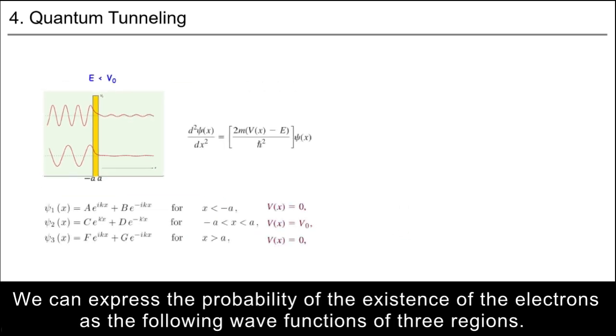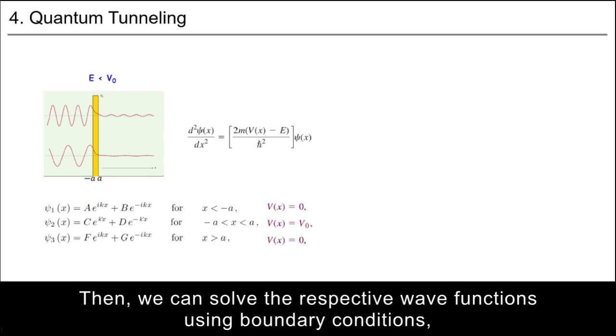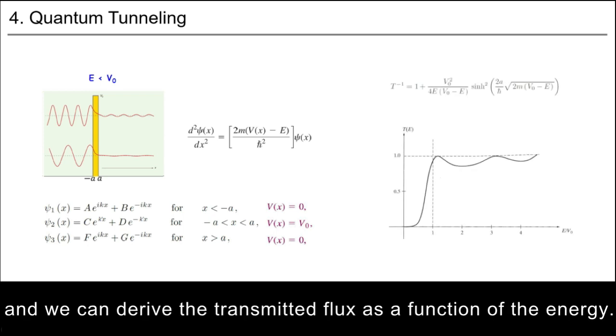We can express the probability of the existence of electrons as the following wave functions of three regions. Then, we can solve the respective wave functions using boundary conditions and derive the transmitted flux as a function of energy.